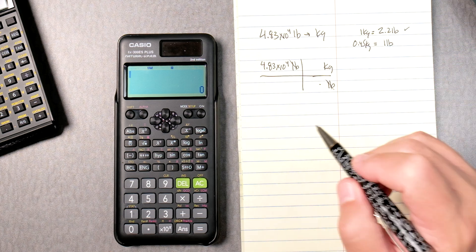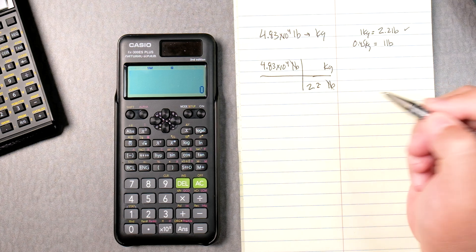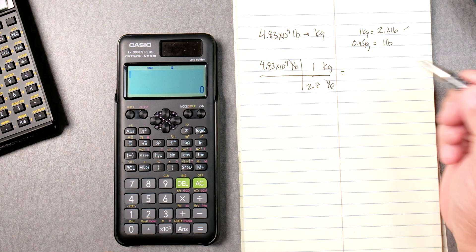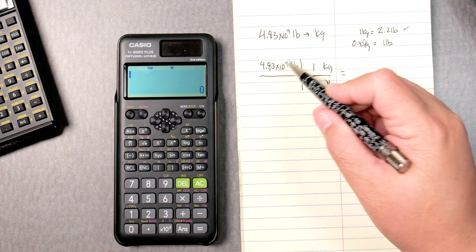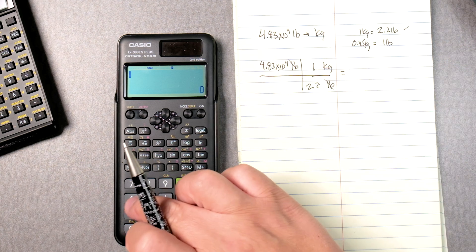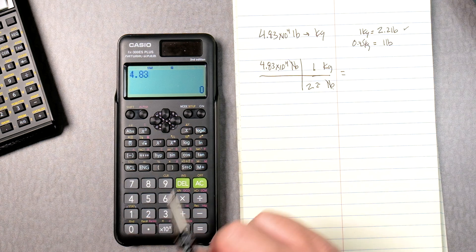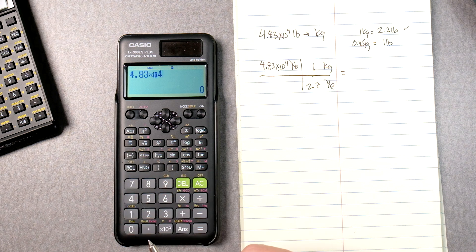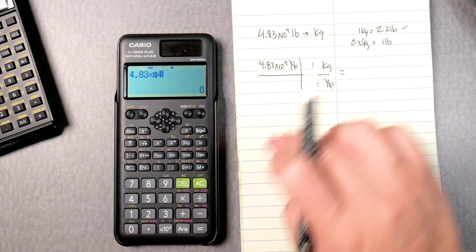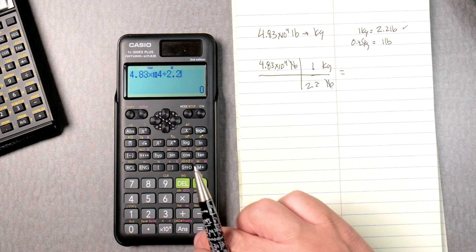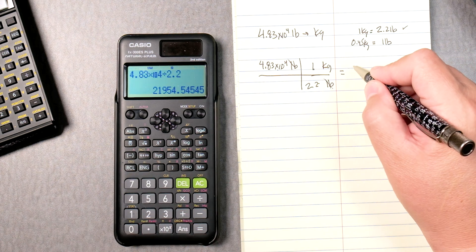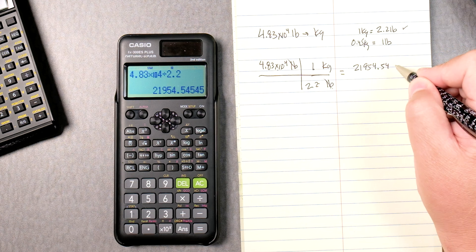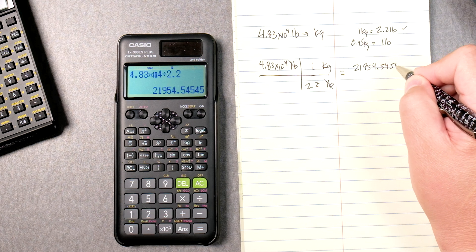The pounds, which one do we use? Well, 2.2 pounds is 1 kilogram. So here, 4.83 times 10 to the fourth times 1 is still 4.83 to the power of 4. And we're going to divide that by 2.2 and that's going to give you 21954.54545.